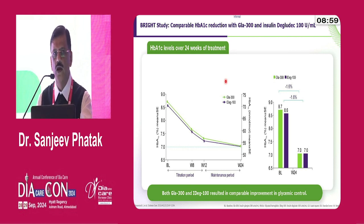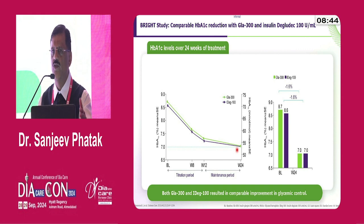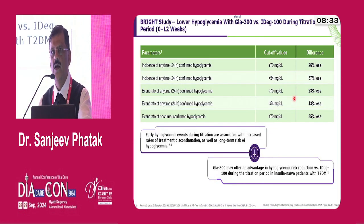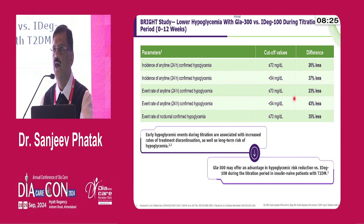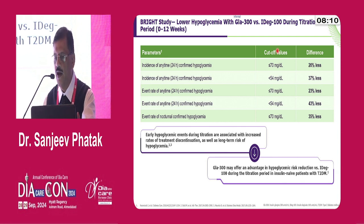The BRIGHT study compared glargine U300 versus degludec — both second generation basal insulins. At the end of 24 weeks, both groups had equal HbA1c reduction since these are treat-to-target studies, confirming similar potency. However, what was different was the rate of hypoglycemia in the titration period — the most critical period for discontinuation and hypoglycemia. Overall hypoglycemia risk was lower with glargine U300 compared to degludec.